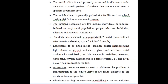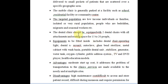The clinic should be equipped with two dental chairs with attachments and seating capacity for 15 to 20 people, so that while treatment is being done, the remaining people can be seated inside. Equipment fitted inside includes a dental chair, operating light, x-ray unit, autoclave, glass bead sterilizer, metal cabinet with wash basin, portable dental unit, stabilizer, generator, water tank, oxygen cylinder, public addressing system, TV and DVD player, and health education models.